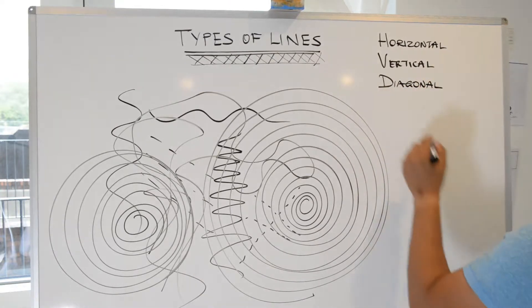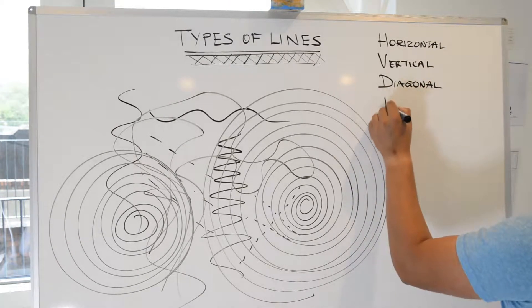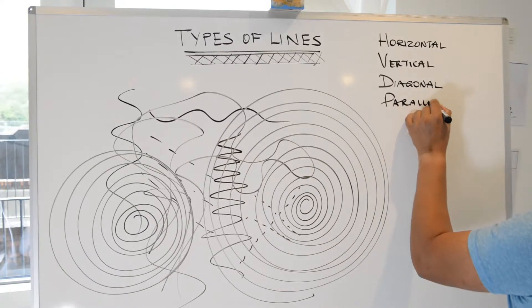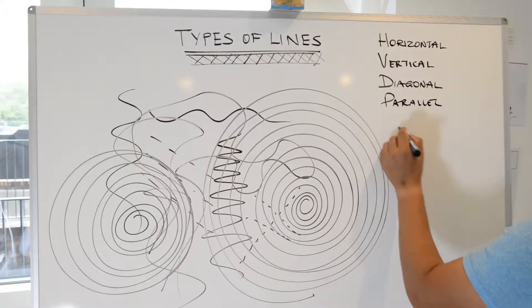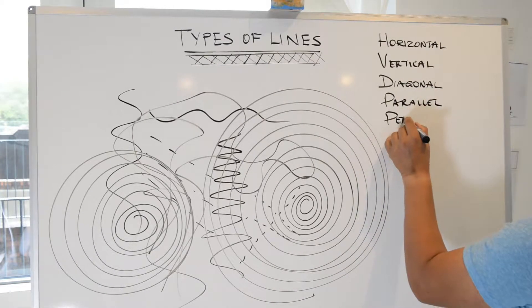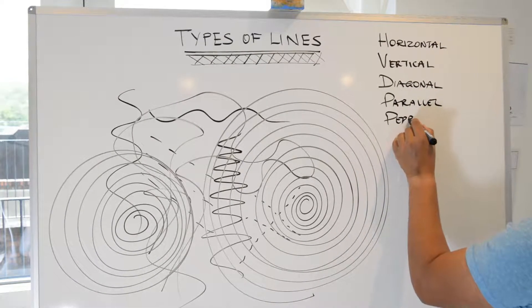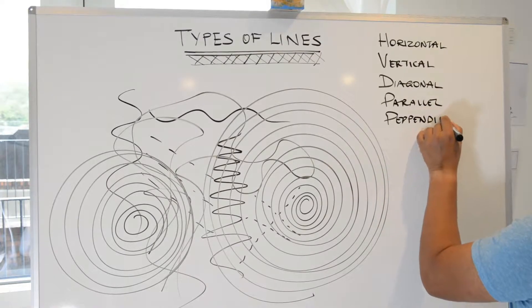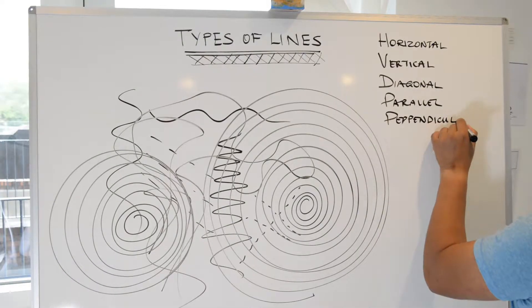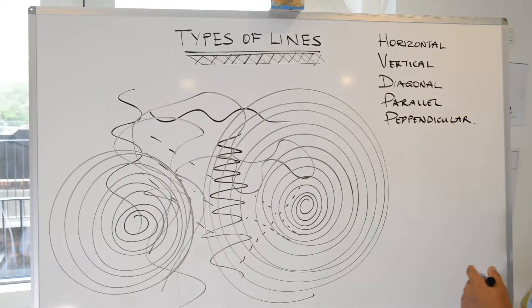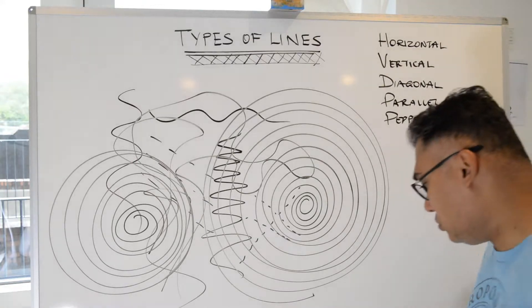Diagonal, parallel, and perpendicular. So those are the five types of lines we're going to look at.